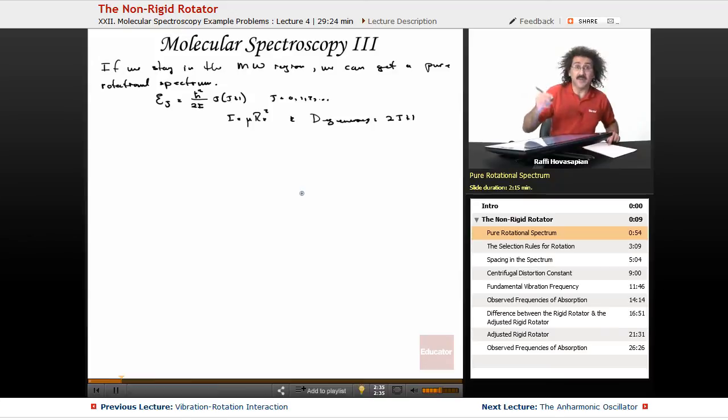In terms of inverse centimeters, which is what we're dealing with, in terms of wave numbers, the rotational term F(J) equals B tilde times J times J plus 1.